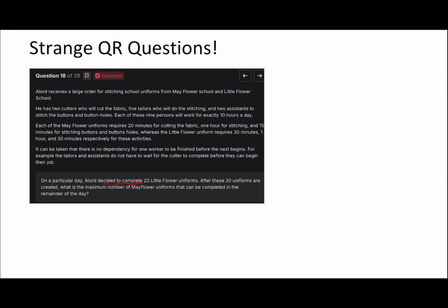Let's go on to the next one. I've done a very similar question in one of my ratios videos because that's all this really is. Arlow decided to complete 20 Little Flower uniforms. After 20 of these uniforms are created, what's the maximum number of Mayflower that can be completed in the remainder of the day? This is one of those I would 100% skip because the abstract seems too long, but when I come back to it I'll read it. He has two cutters who will cut the fabric, five tailors who will do the stitching, and two assistants to stitch the buttons and buttonholes. Each of these nine persons will work for exactly 10 hours a day. Each of the Mayflower uniforms requires 20 minutes for cutting, one hour for stitching, 15 minutes. But it says he completes 20 Little Flowers, so each Little Flower is 30 minutes, which is 0.5 hours, one hour, and 0.5 hours respectively.